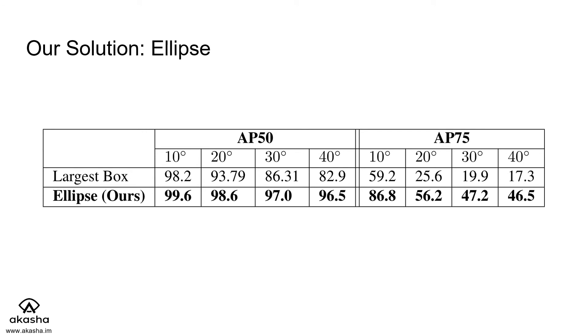Comparing the IOU between MS COCO's ground truth labels and the ellipse prior shows a significant improvement over the largest box method.